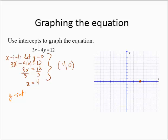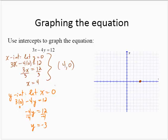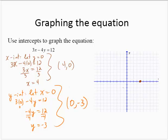For the y-intercept, letting x equal 0: 3 times 0 minus 4y equals 12. That gives us negative 4y equals 12. Dividing through by negative 4, y equals negative 3. So the y-intercept is 0, negative 3. We plot both points and draw the line through them.